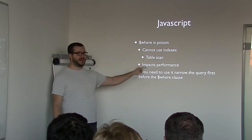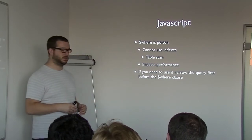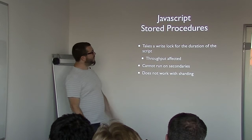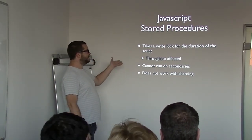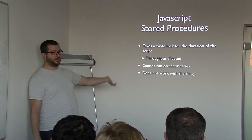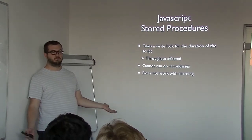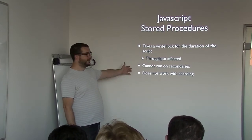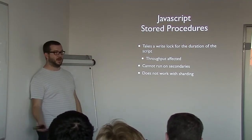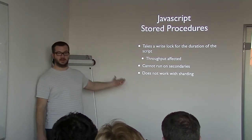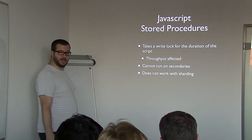If you need to use $where, make sure you narrow the query first — the first part of the query should use an index, and then $where filters on those returned documents. Also, writing JavaScript stored procedures is a bad idea. JavaScript functions executed with eval need to take a write lock for the duration of the call, which truly affects throughput because there's an unknown amount of time spent in that JavaScript code. These procedures can only run on the primary — trying to run eval on a secondary will fail with an error. And it doesn't work with sharding, so you have a scalability issue going forward.